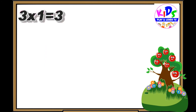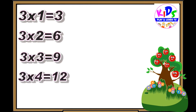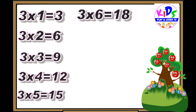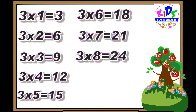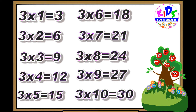Hey kids, let's repeat. 3 ones are 3, 3 twos are 6, 3 threes are 9, 3 fours are 12, 3 fives are 15, 3 sixes are 18, 3 sevens are 21, 3 eights are 24, 3 nines are 27.